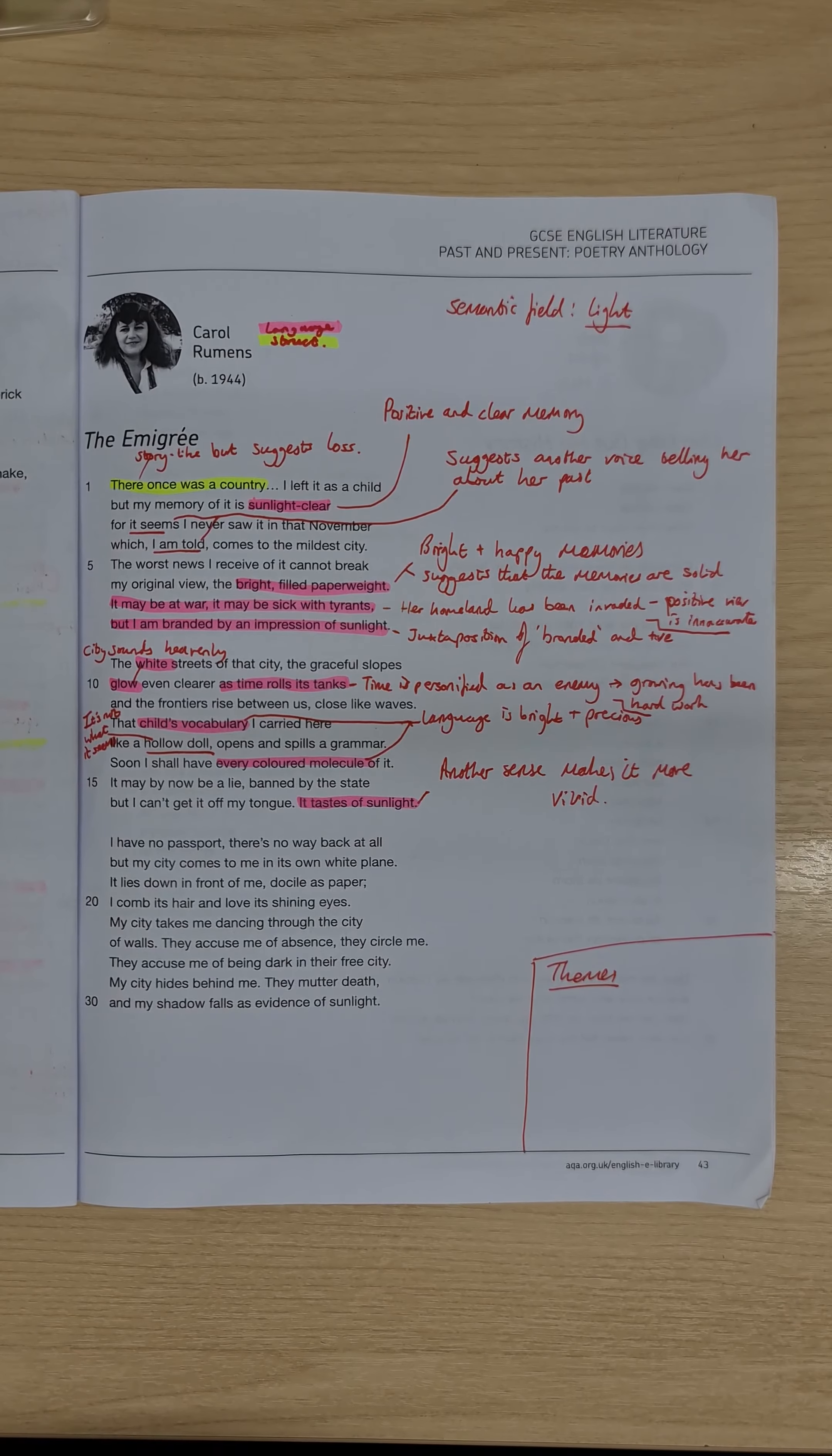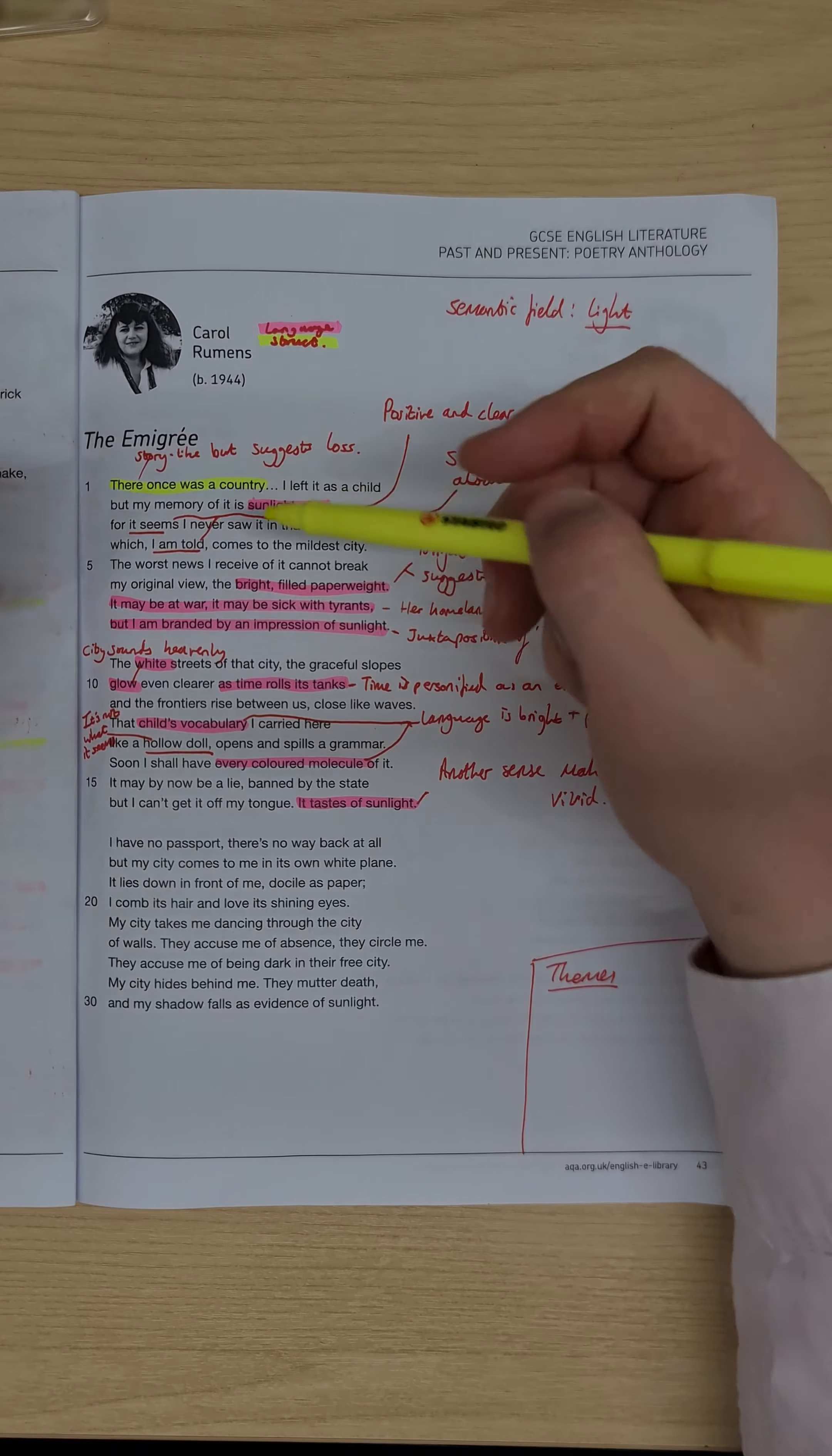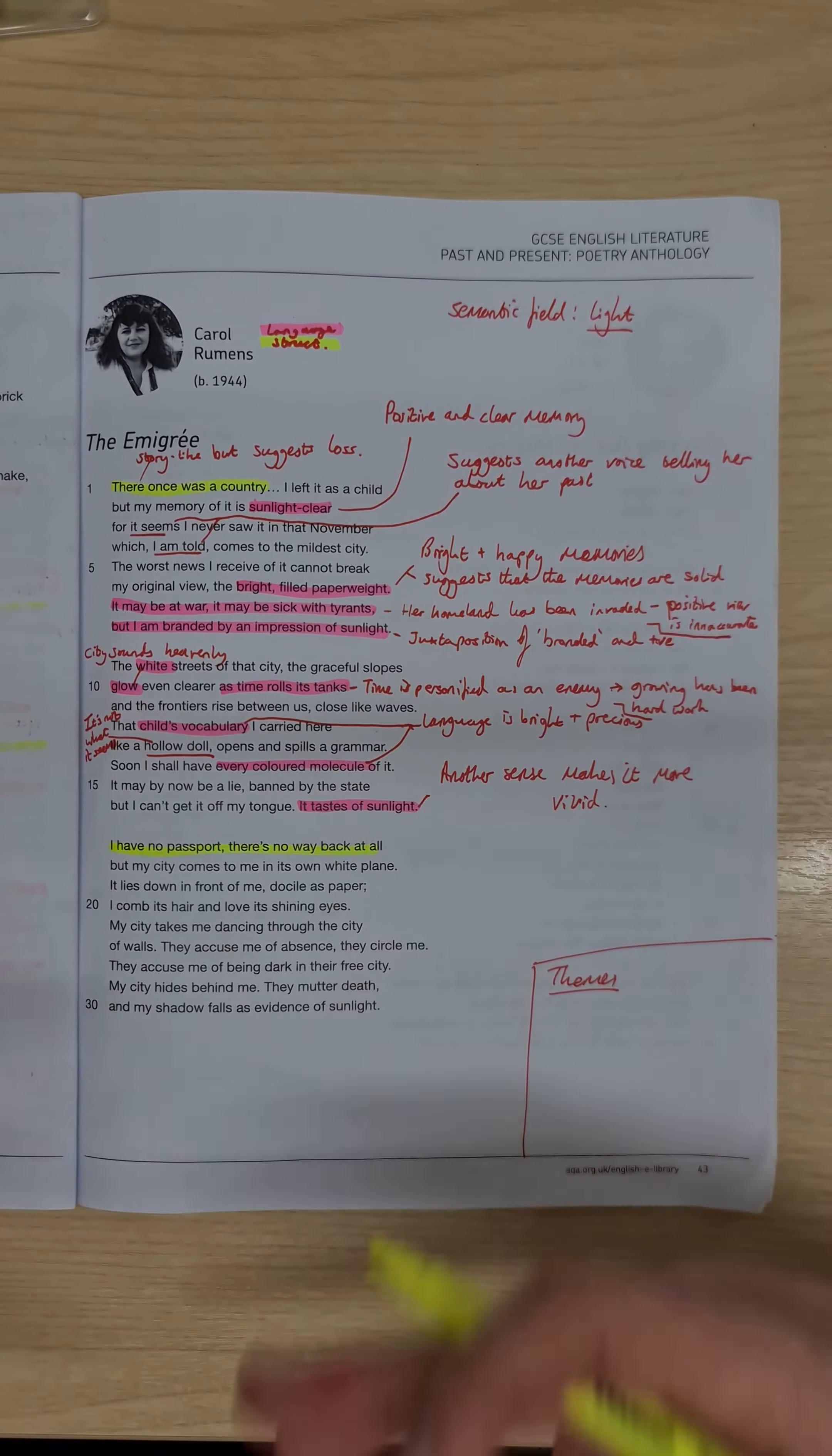I have no passport, there's no way back at all, but my city comes to me in its own white plain. What's interesting with this structurally is I have no passport, there's no way back at all. So if we look up here, structurally, the opening of the poem, the structural opening of the poem was story-like and suggesting loss, here we have this another mood change, almost a volta.